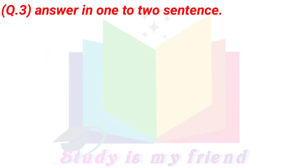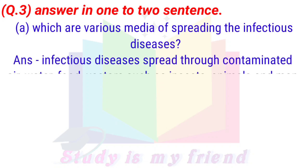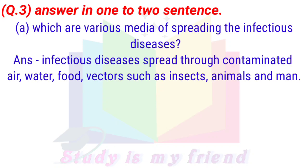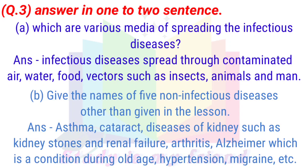Question 3: Answer in 1 to 2 sentences. A. What are the various media of spreading infectious diseases? Answer: Infectious diseases spread through contaminated air, water, food, vectors such as insects, animals, and man. B. Give the names of 5 non-infectious diseases other than those given in the lesson. Answer: Asthma, cataract, diseases of kidney such as kidney stone and renal failure, arthritis, hypertension, migraine, etc.